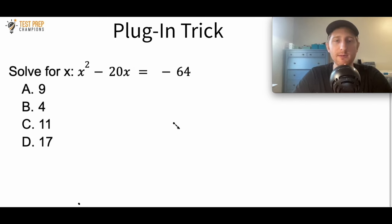Now I'm going to show you a trick that sometimes works to get these solve for x style questions right. The example here is x squared minus 20x equals negative 64, and I call this the plug-in trick.